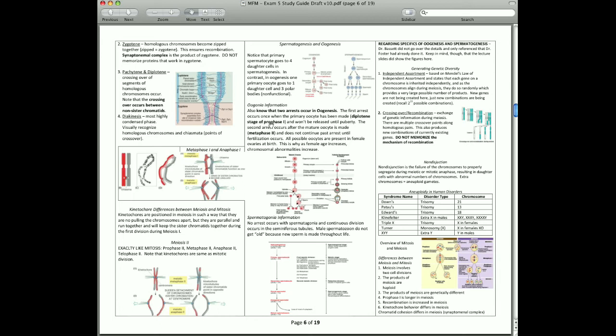One is going to be in the diplotene stage of prophase I. And the cells, the oocytes, will not come out of that arrest cycle until after puberty. After puberty, they will arrest in metaphase II, and they won't come out of that until fertilization.